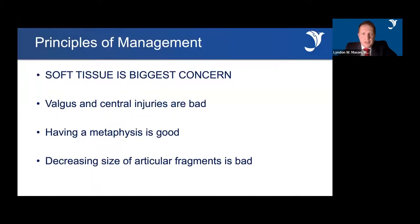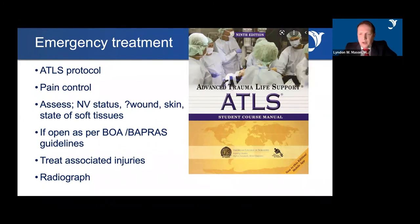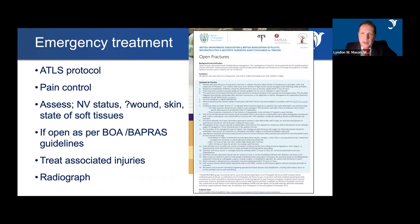The emergency treatment of pilon fractures is, number one, soft tissue — it is always soft tissue and the biggest concern. Valgus and comminuted injuries do badly. Metaphyseal loss is problematic, so the more metaphyseal loss, the more metalwork needed to stabilise. Decreasing size of articular fragments is also bad, as larger fragments are easier to fix. On this side of the pond, ATLS protocol applies — pilon fractures are often associated with other injuries, so treat the patient first. The British Orthopaedic Association and BAPRAS guidelines also guide our treatment of open fractures.